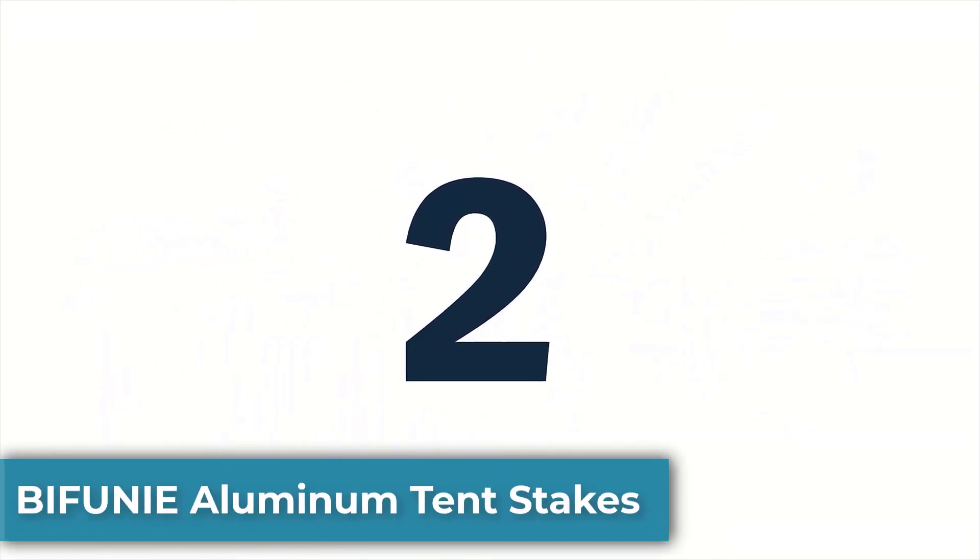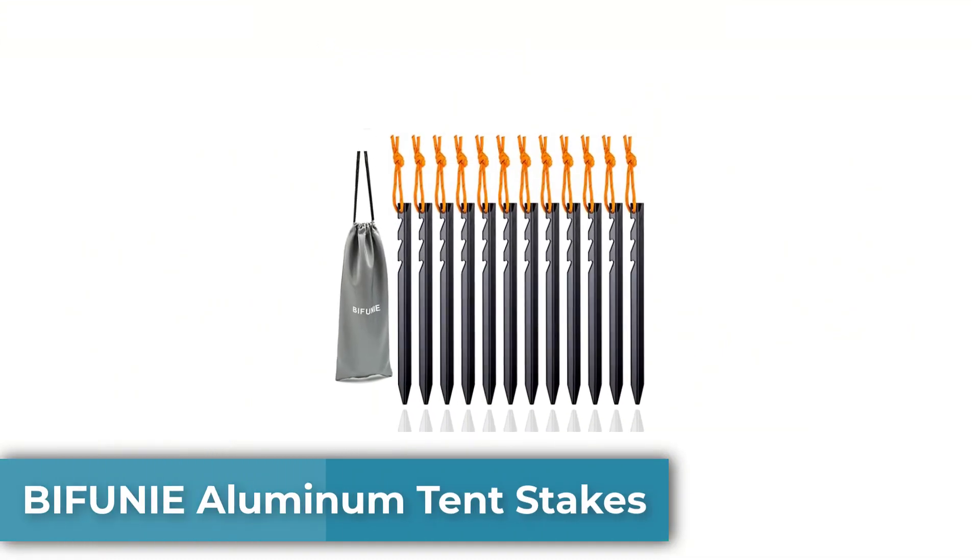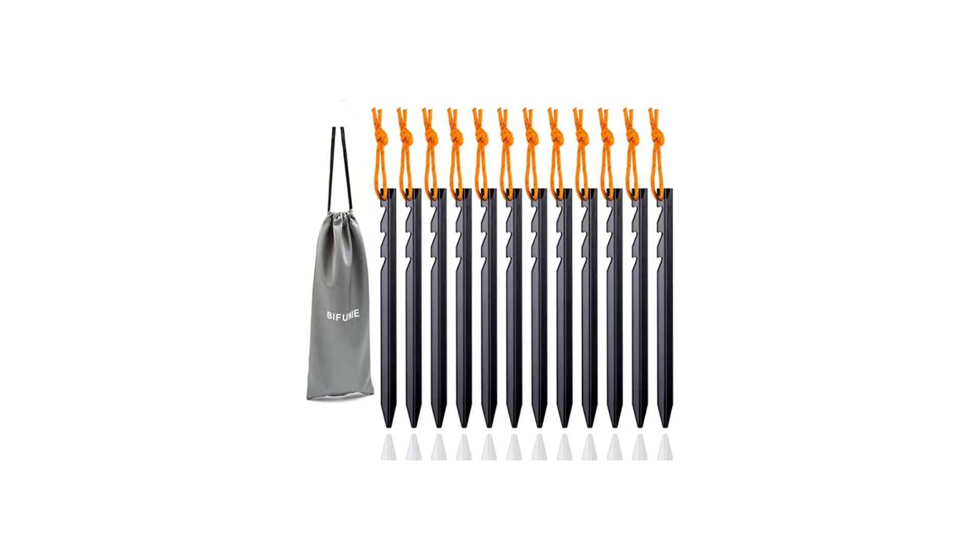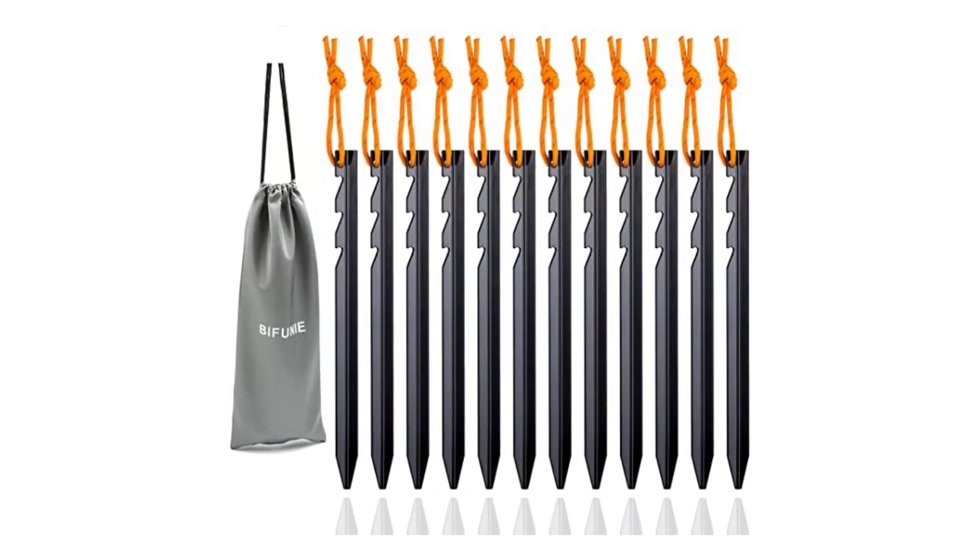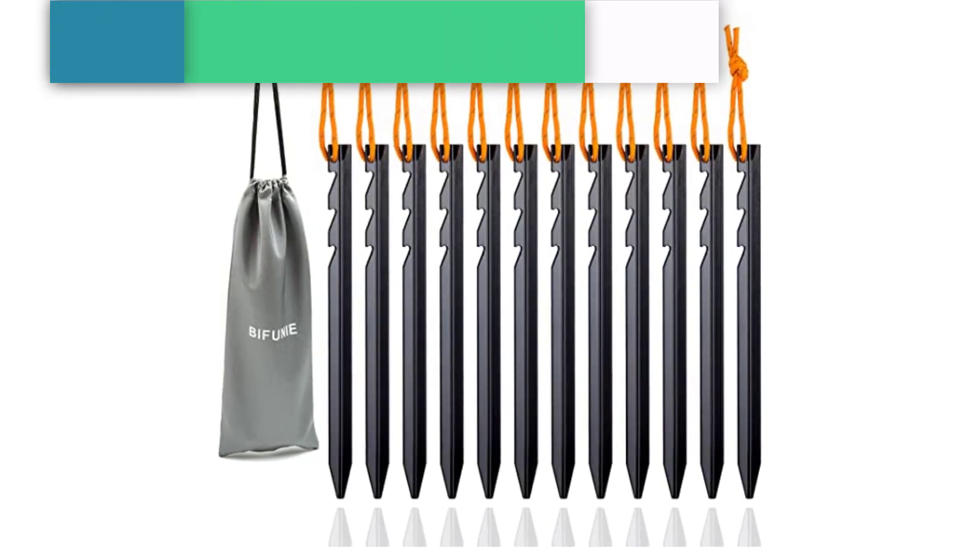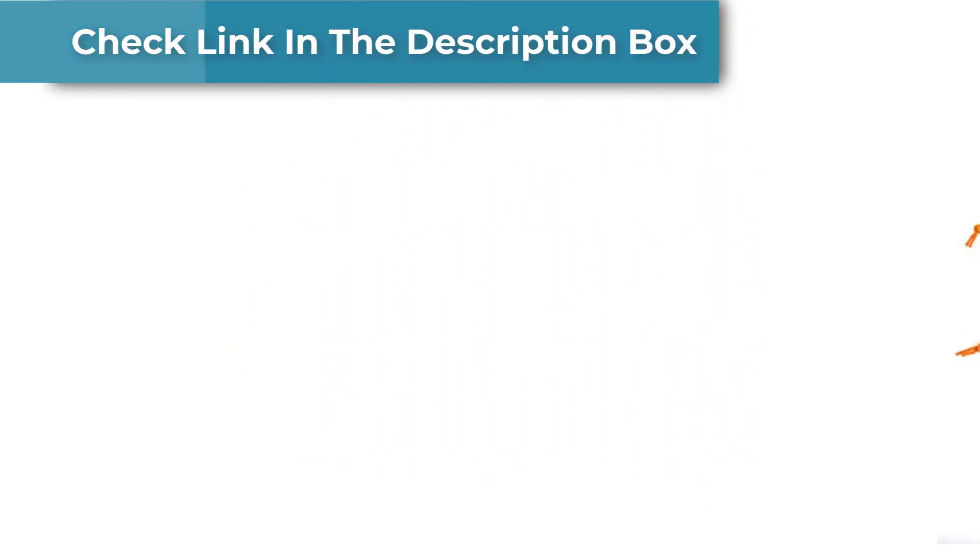Number 2. Biphany Aluminum Tent Stakes. The Biphany Aluminum Tent Stakes pegs are an excellent choice for anyone who needs reliable and durable tent stakes for camping or outdoor activities. These stakes are made from high-quality aluminum alloy, which makes them lightweight and rust-resistant.